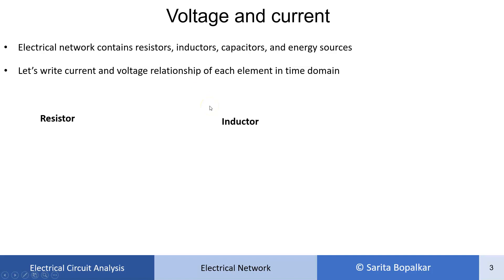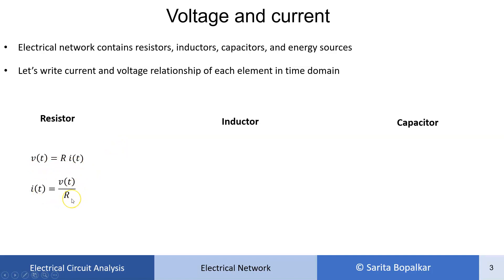First, resistor: V(t) is equal to R·I(t) and I(t) is equal to V(t) upon R. For the resistor it is very simple because the resistor is not an energy storing element.